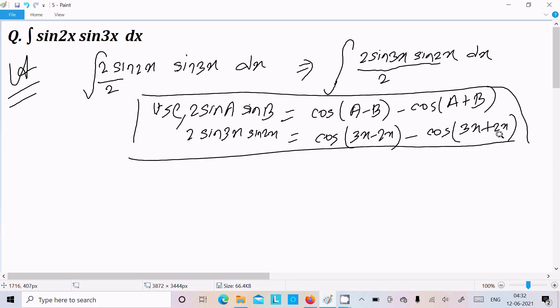So we can in place of 2 sin 3x write this one. So let's write here 2 sin a into sin b, that is cos(3x minus 2x) minus cos(3x plus 2x), curly bracket and dx.